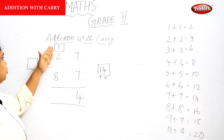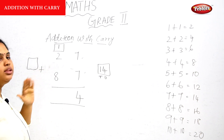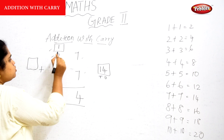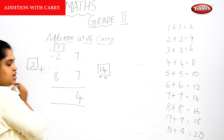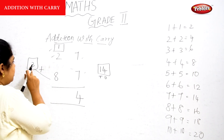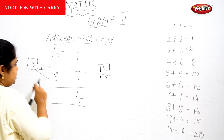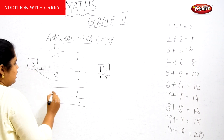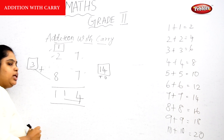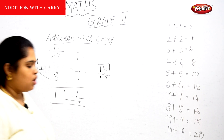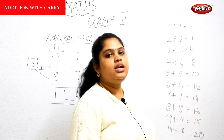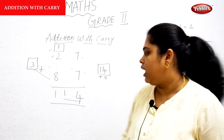And what is the number we got in the tens place? 1. So 1 goes in the carry box. Now it's time to add all three numbers. When we add 1 plus 2, we get 3. And 3 plus 8 is 11. So 114 is the answer. This is how addition with carry is performed.